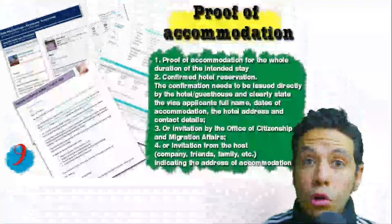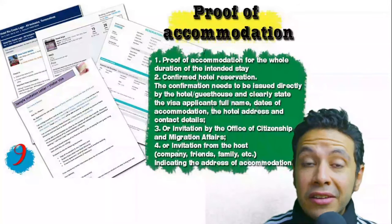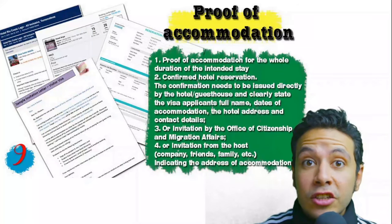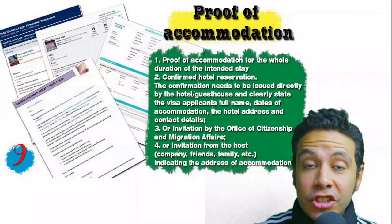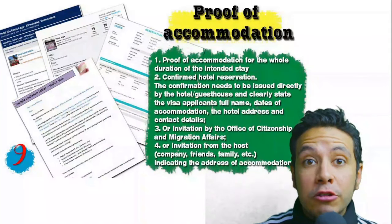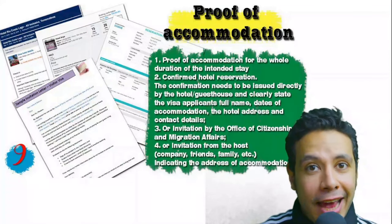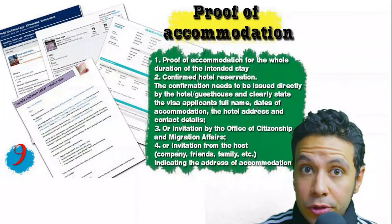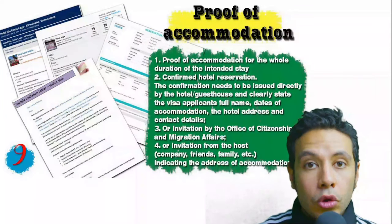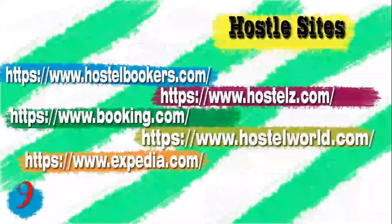You will also need to provide proof of accommodation. This can be a confirmed hotel reservation, an invitation from a host in the country, or an invitation from an organization you are visiting. For hotels or hostels, an initial booking is usually acceptable, though sometimes a confirmed booking is needed. The hotel name, address, and contact number must be mentioned. If invited by a person, the invitation letter should be mailed directly to the embassy or accompanied by a copy of that person's passport.